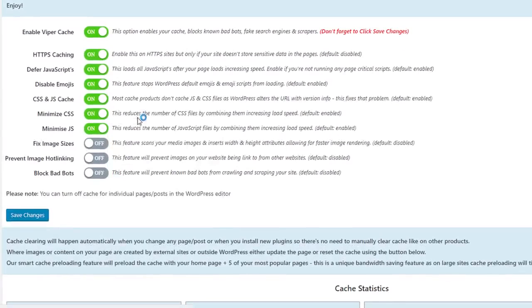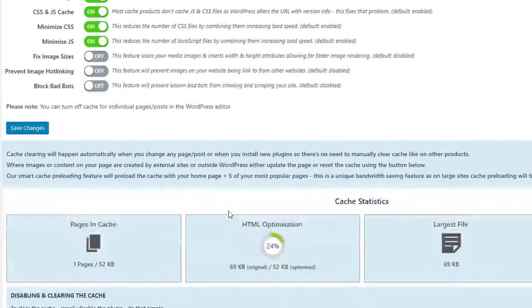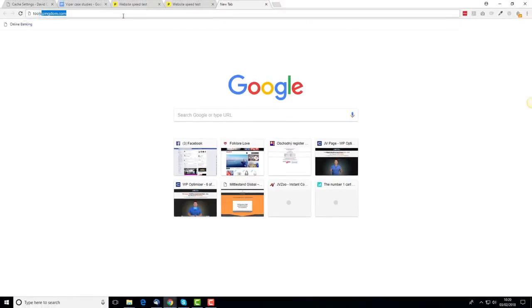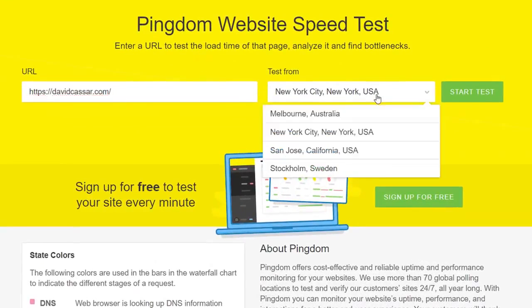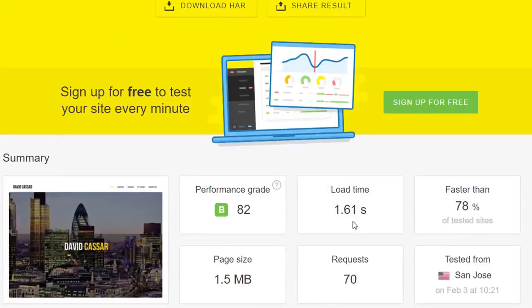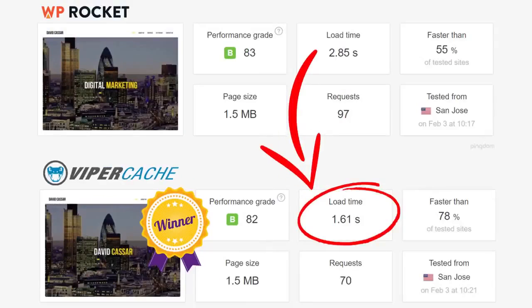So now that ViperCache is activated, let's make sure the cache is loaded and let's run a speed test to see the results. As you can see, ViperCache reduced the load time by 450% from the original speed test. And in this test, it performs 77% faster than WP Rocket.